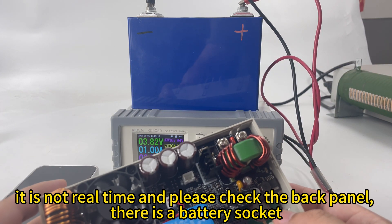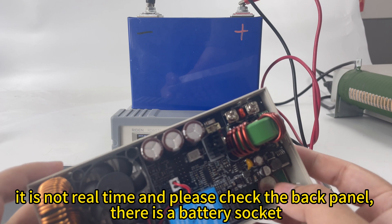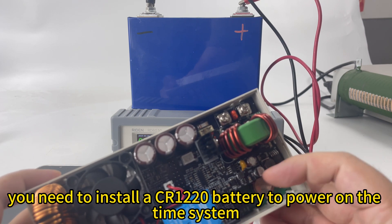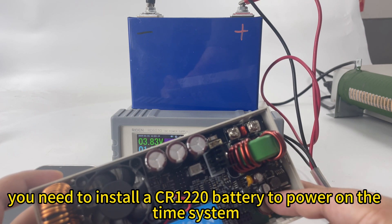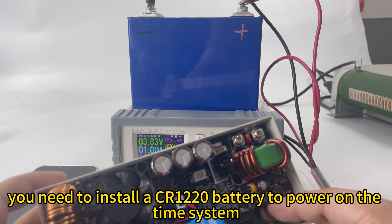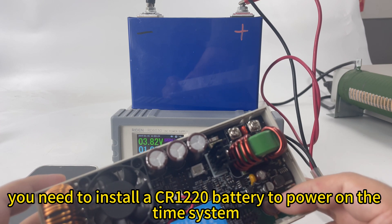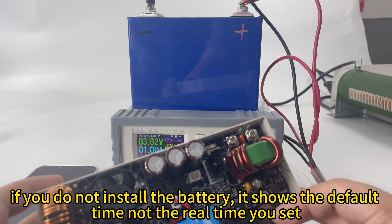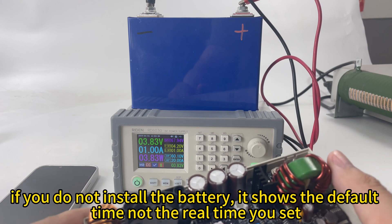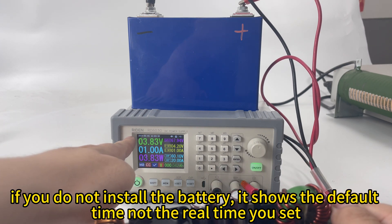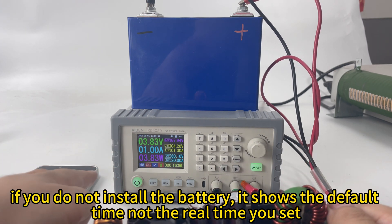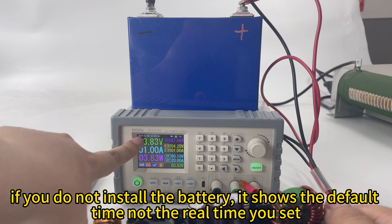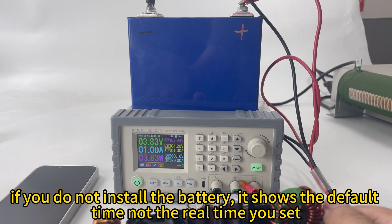The reason why it is this is because as you can see here, on the back of the panel, there is a clock battery socket. You need to install a CR1220 battery inside the socket to power on the time system. If you do not install the battery, it will show the default time, which will not change to the current time.